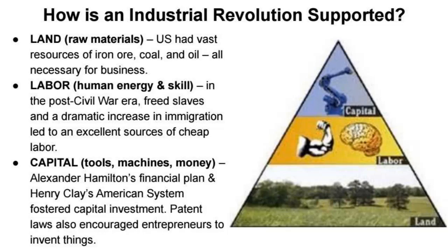How is this industrial growth possible? It can be summarized in three words: land, labor, and capital. Land stands for any raw material — not just farmland but resources like iron ore, coal, and oil, all necessary for business then and now. Labor is the human energy and skill needed, not just in farming but in industry. In the post-Civil War era, freed slaves and a huge increase in immigrants provided an excellent source of cheap labor for business. Capital refers to tools, machines, and the money to pay for them.